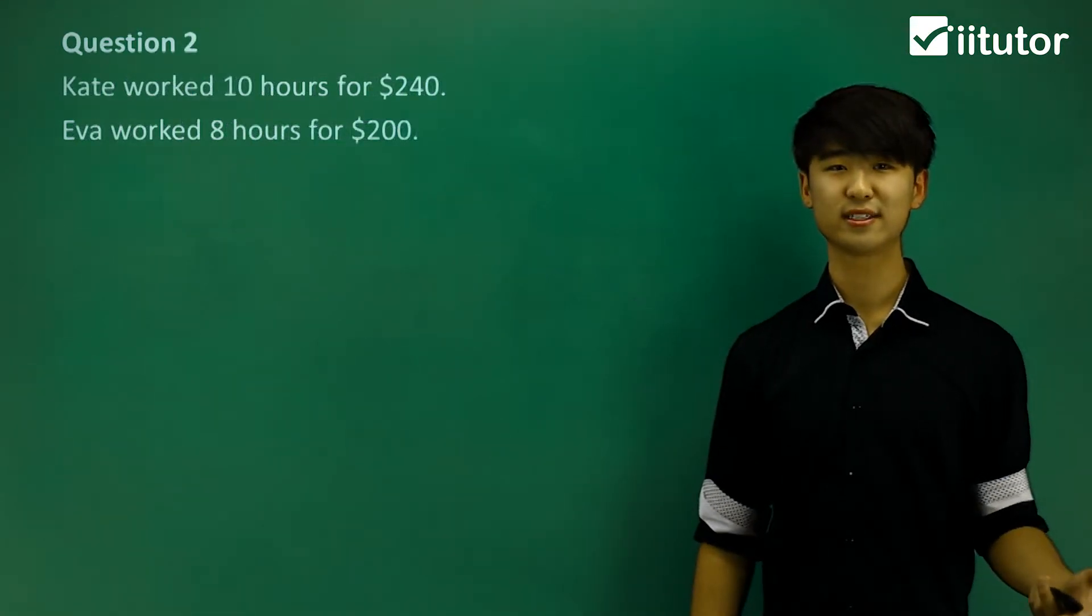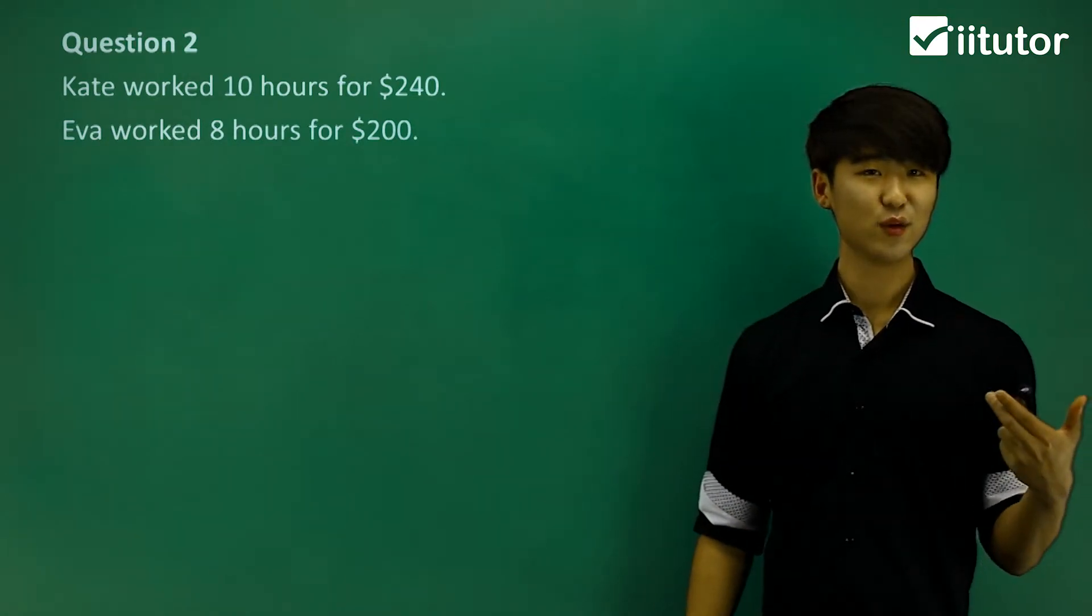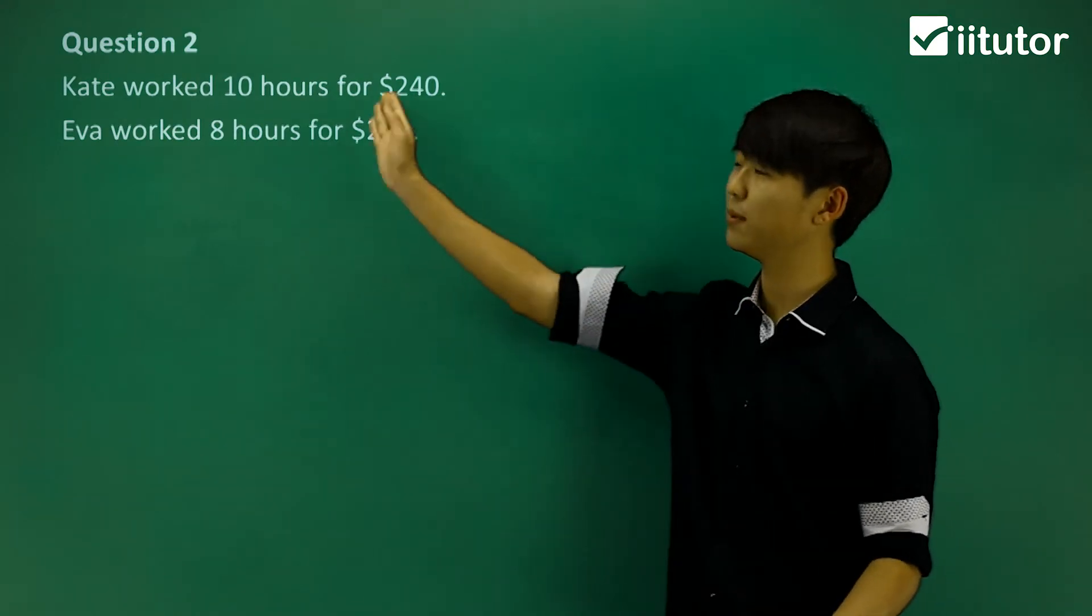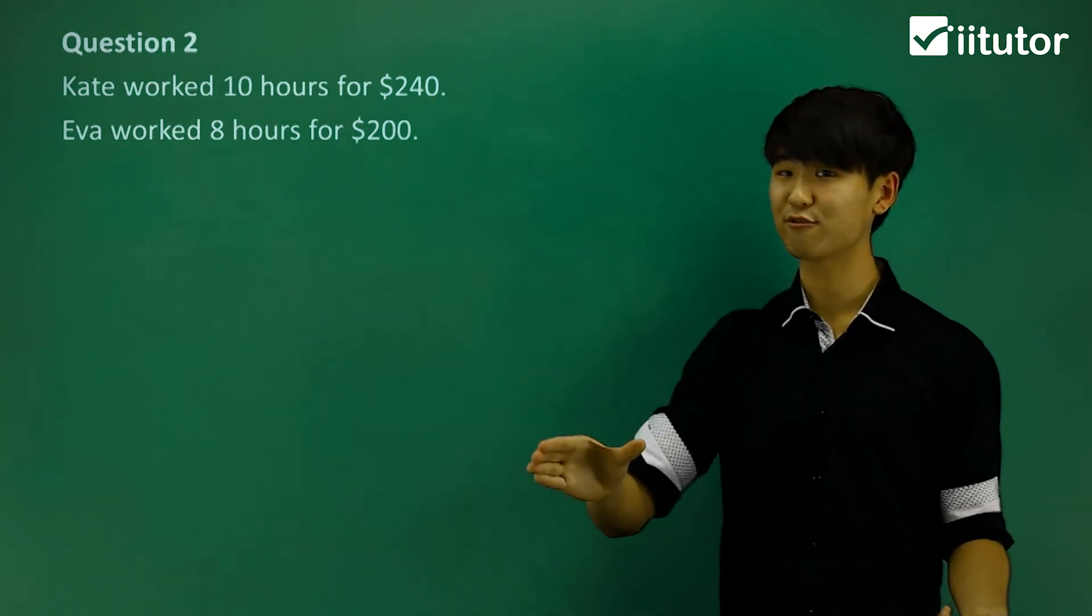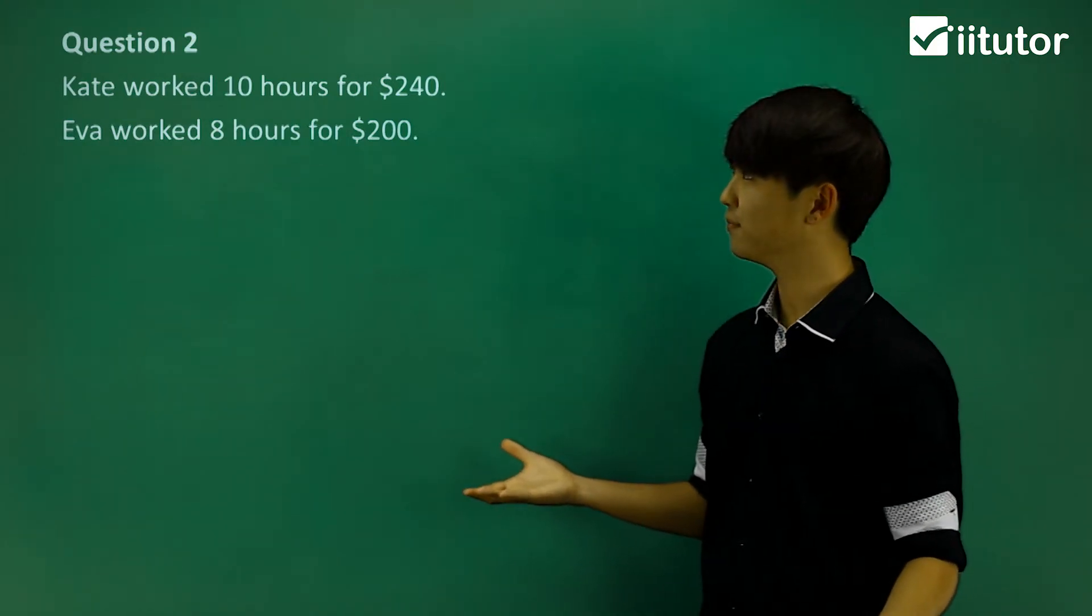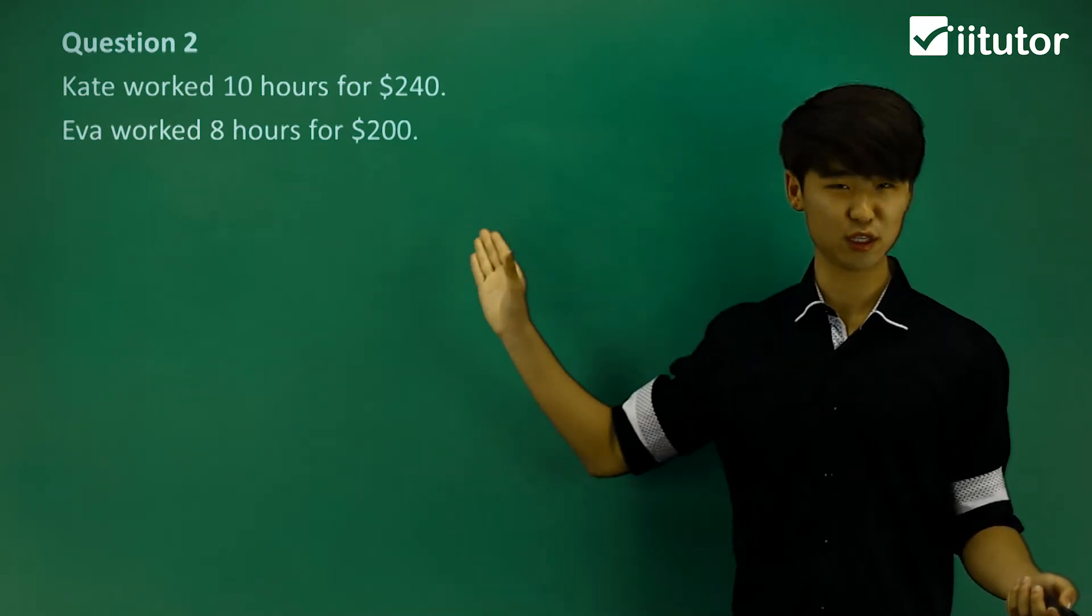Now let's take a look at this. So Kate worked 10 hours for $240, while Eva worked 8 hours for $200. So again, we're going to be looking at this, and we're going to look at their rates, and try and see who has a better job. Now when it comes to part-time work and casual work, we use a lot of hourly rates.